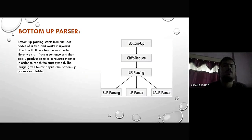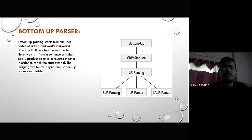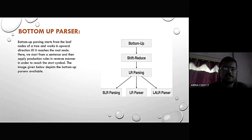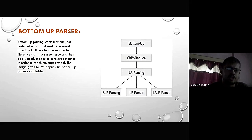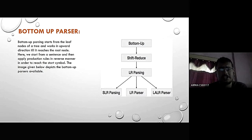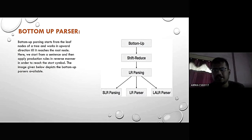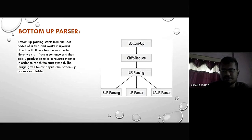A bottom-up parser starts from the leaf node of a tree — that is, from the very bottom — and works its way upward until it reaches the root node at the top. We start from the sentence and then apply production rules in reverse in order to reach the start symbol.